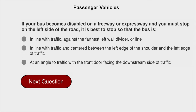If your bus becomes disabled on a freeway or expressway and you must stop on the left side of the road, it is best to stop so that the bus is at an angle to traffic with the front door facing the downstream side of the traffic.